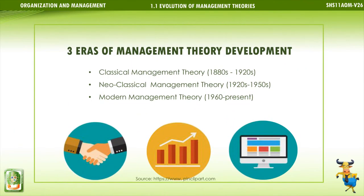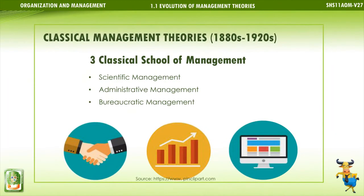There are three eras of management theory development: Classical Management Theory, 1880s to 1920s; Neoclassical Management Theory, 1880s to 1950s; and Modern Management Theory, 1960s up to the present. The Classical Management Theories encompass three classical schools of management: Scientific Management, Administrative Management, and Bureaucratic Management.